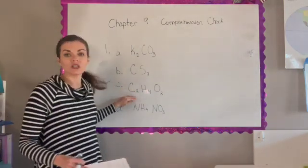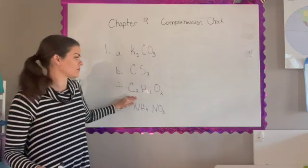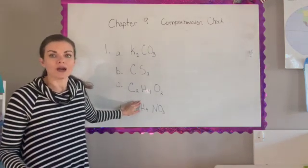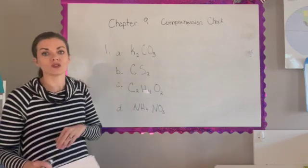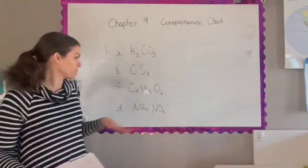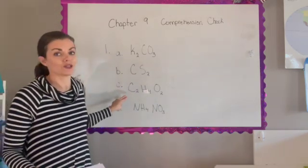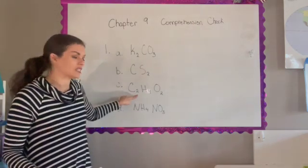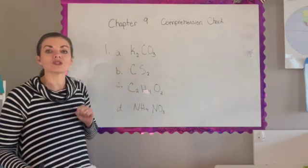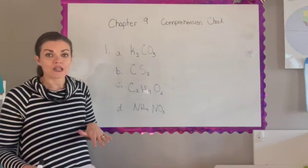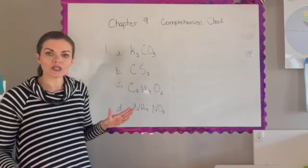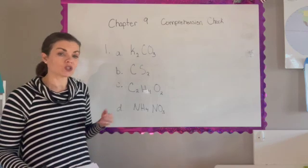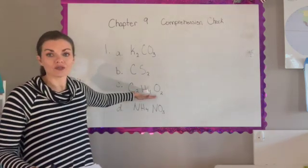For compound C, we have C₂H₄O₂. There is no metal in this compound, so it is a covalent compound. You may recognize it's a molecular formula rather than an empirical formula because it can be simplified. Since there's no metal and it's not ionic, it won't conduct electricity and won't break apart — it stays as this compound in water.